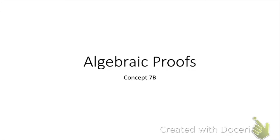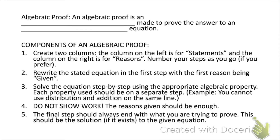Geometry Concept 7b: Algebraic Proofs. In this lesson we're going to take those algebraic properties that we talked about in Concept 7a and use those to learn how to write a proof. An algebraic proof is an argument made to prove the answer to an algebraic equation.